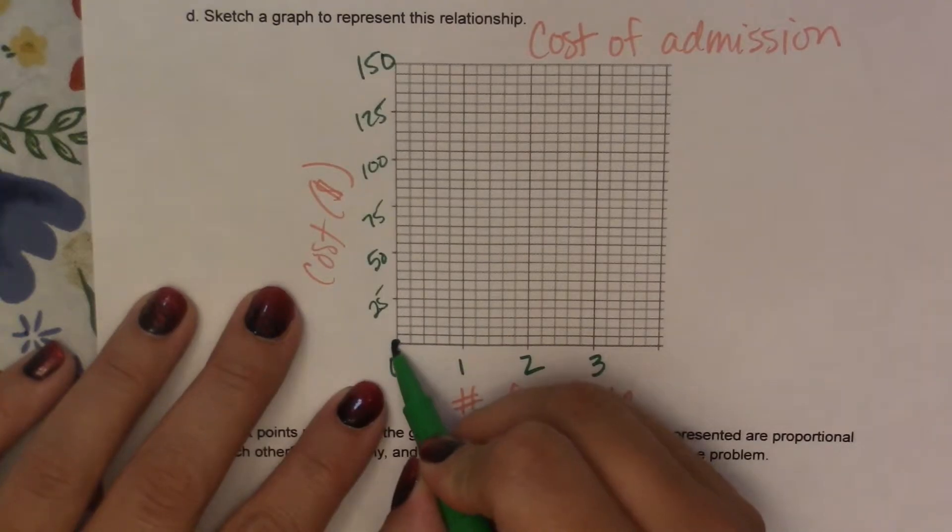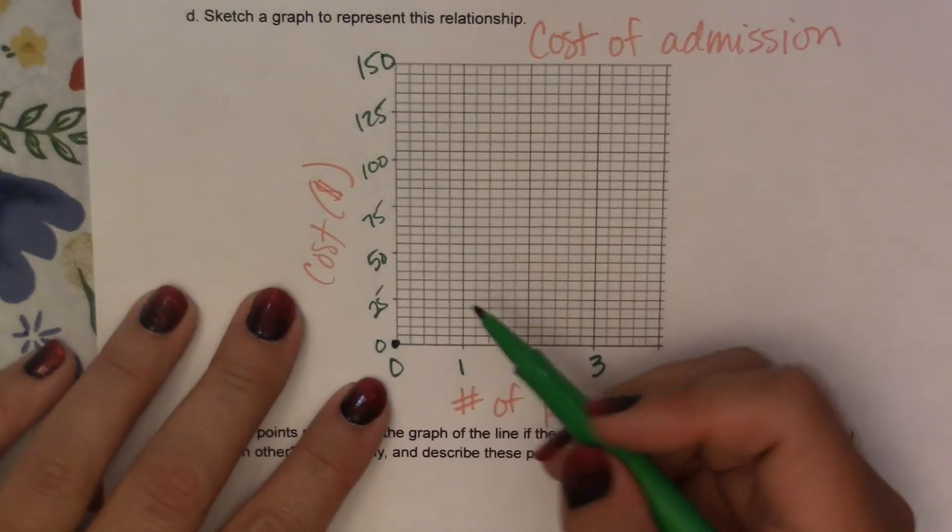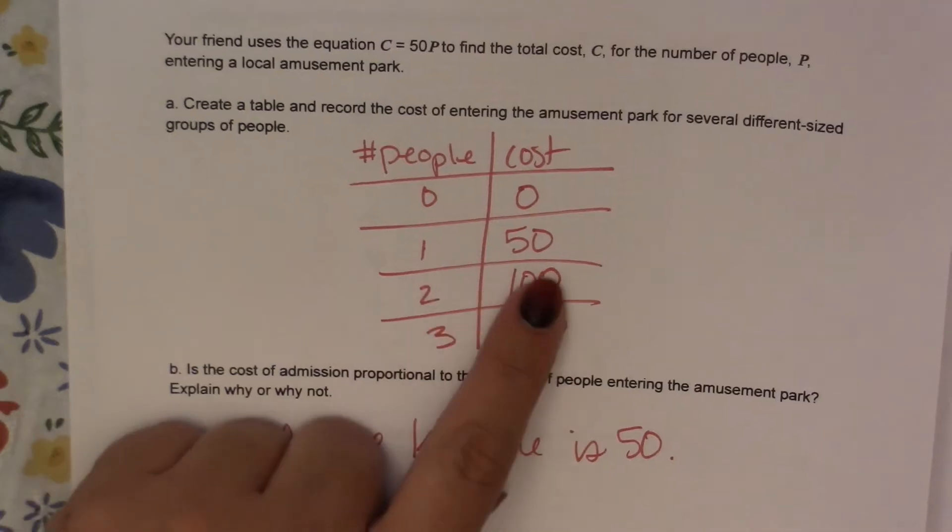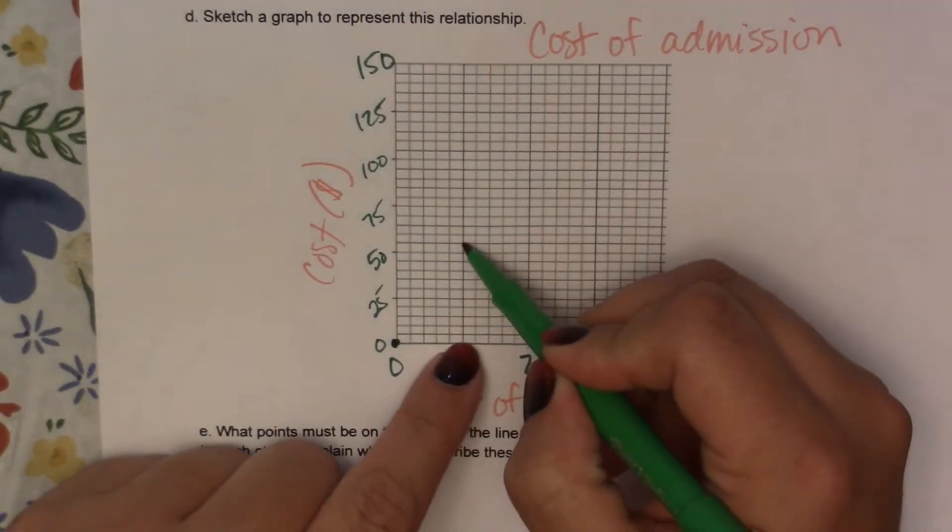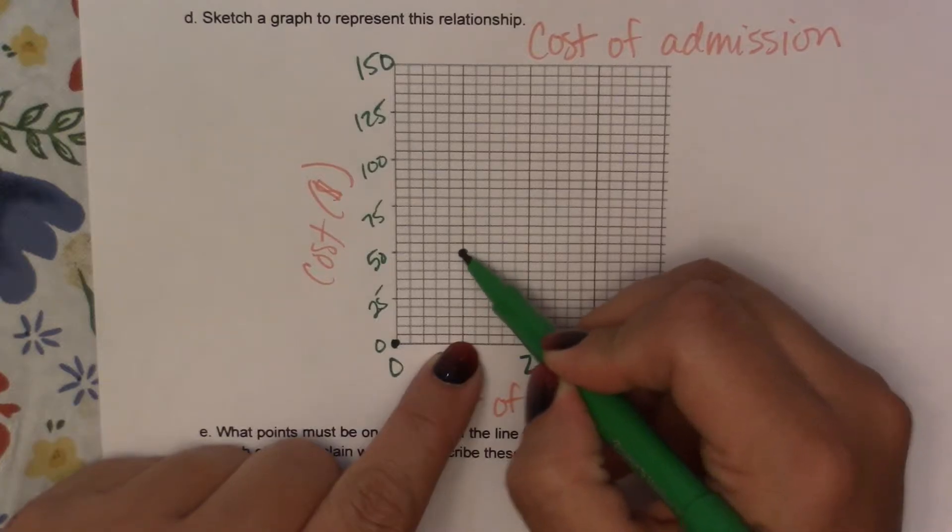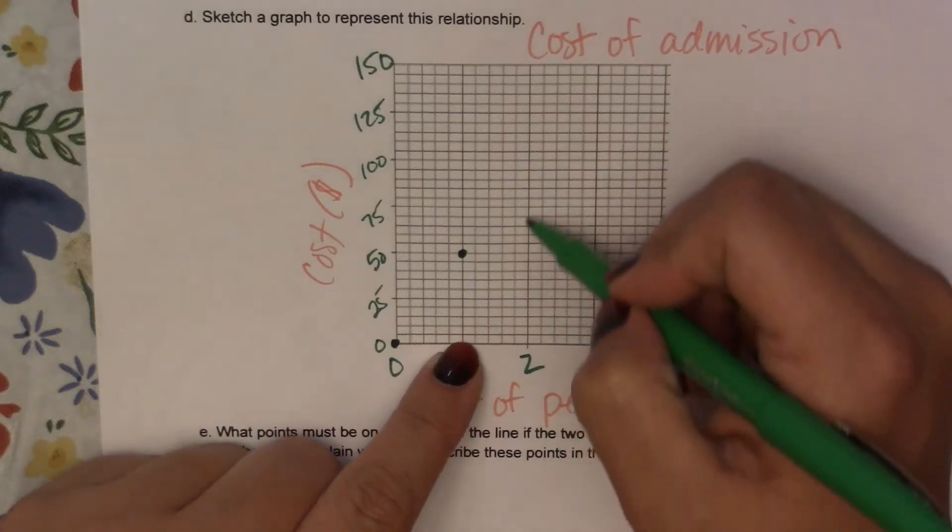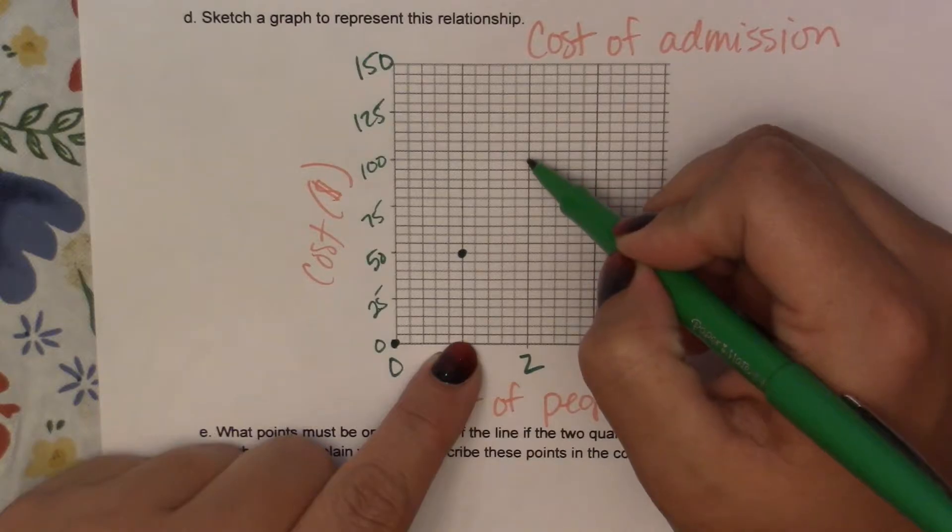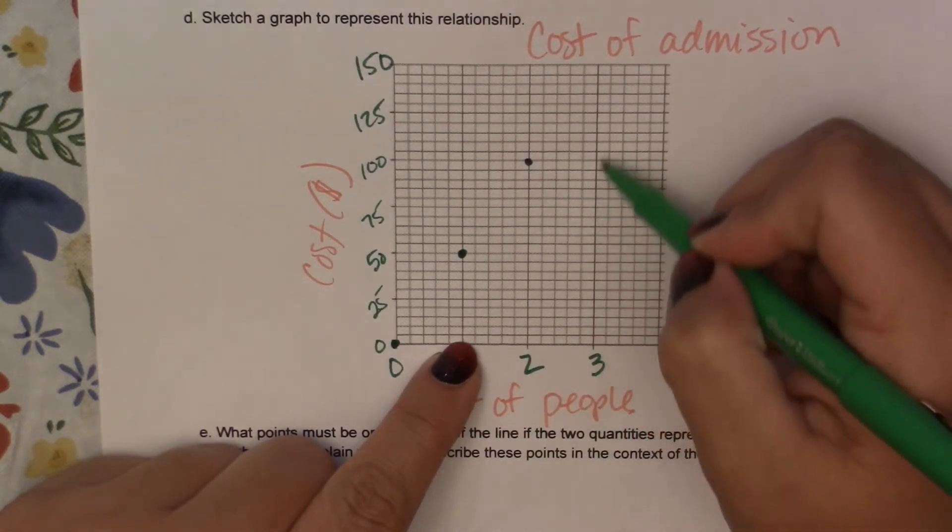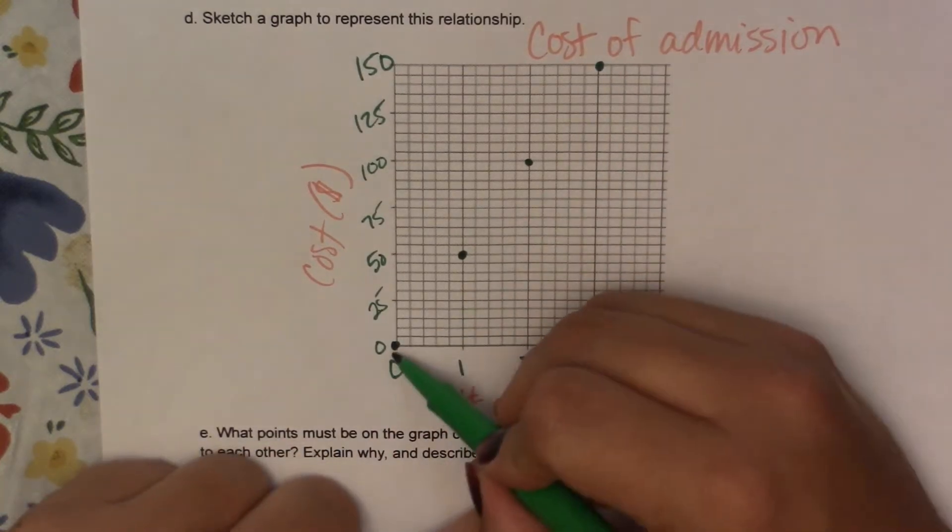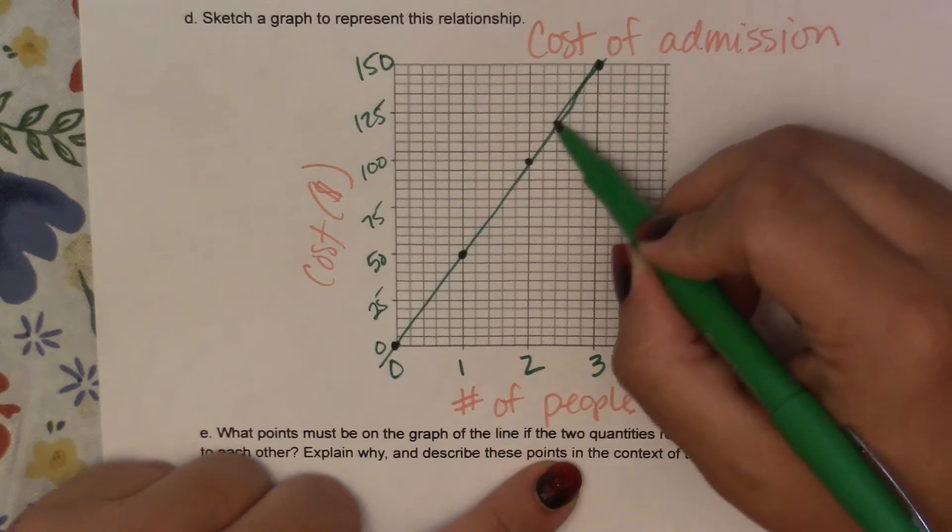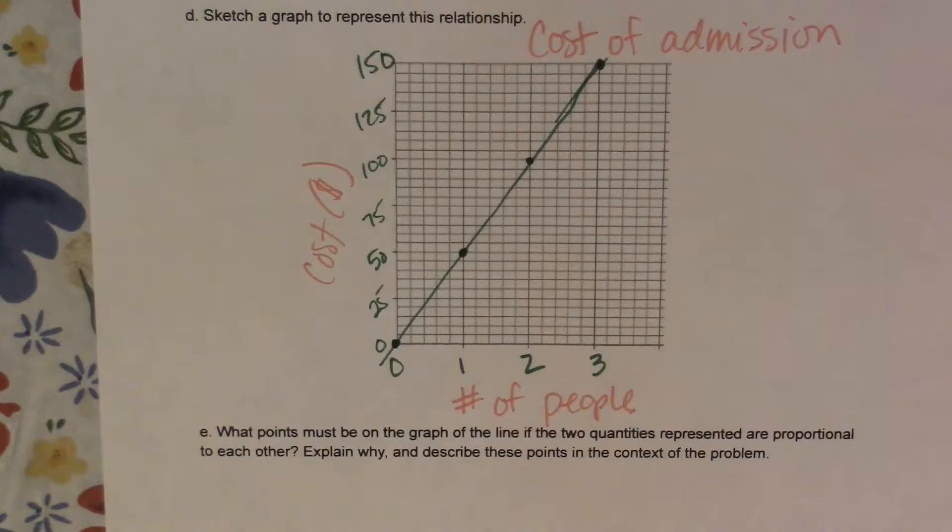Alright, so my first point is 0, 0. My next point was 1, 50, so over 1 and up 50. And then it was 2, 100, and then it was 3, 150. So I'm going to try to connect those freehand. Oh, not too bad.